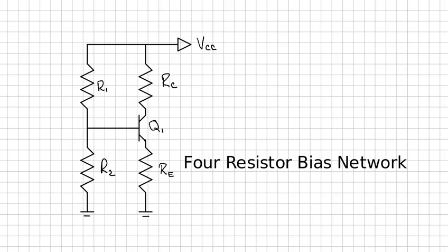For this reason, designers use current sources or the four resistor bias network shown here, which also has the effect of making the Q point, that's VCE comma IC, independent of beta.